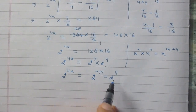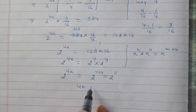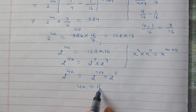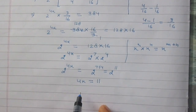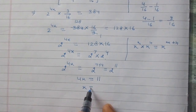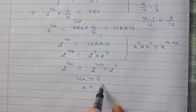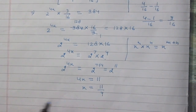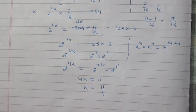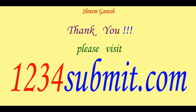On comparing, 4x must equal 11. This is a linear equation in x, and we get x equals 11 divided by 4. So the value of x is 11 divided by 4.